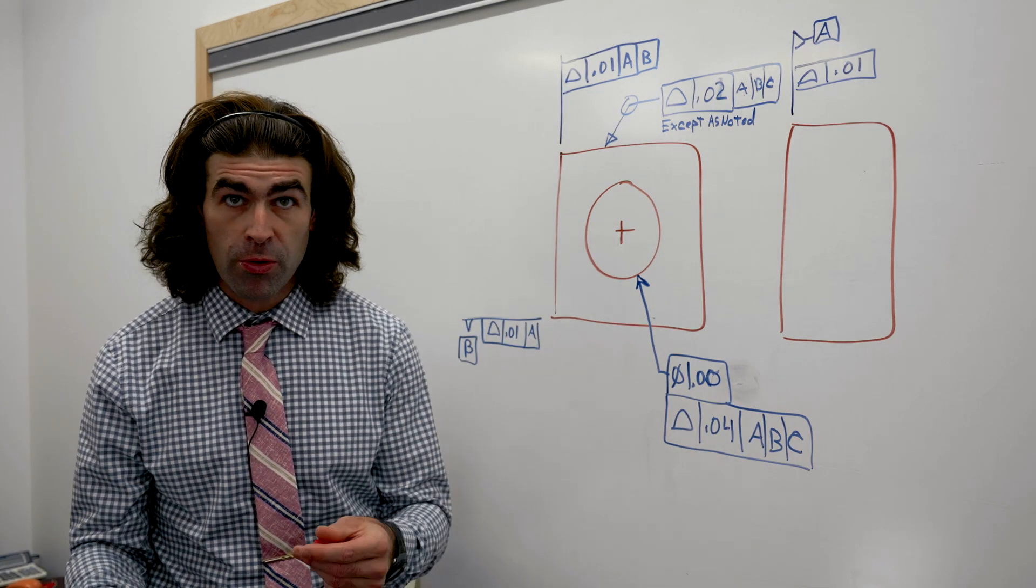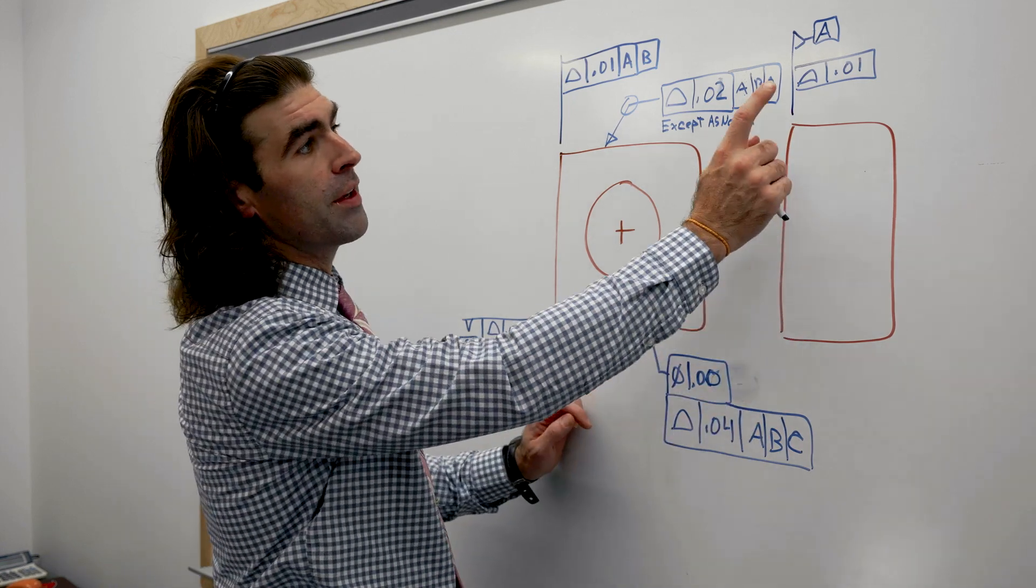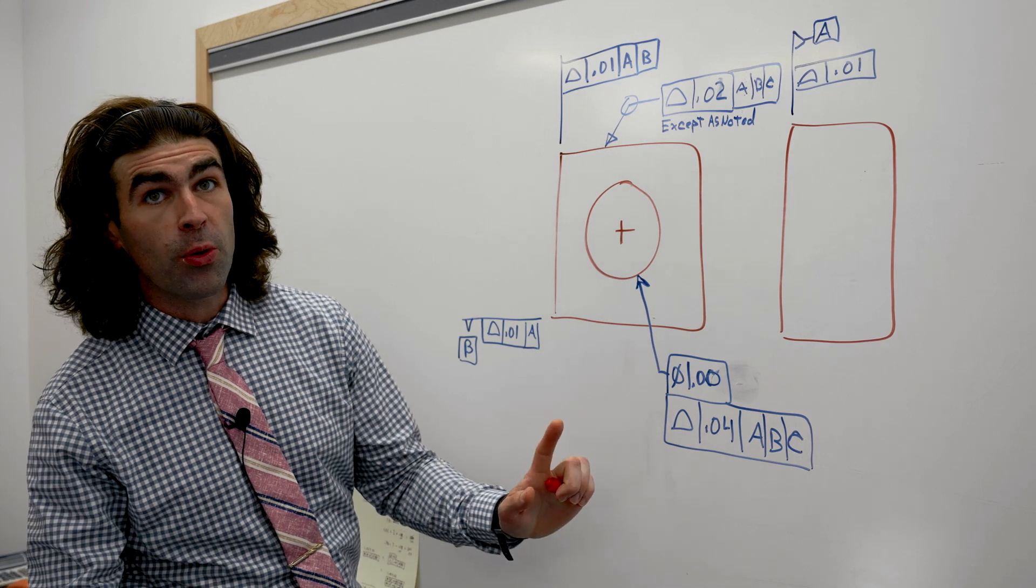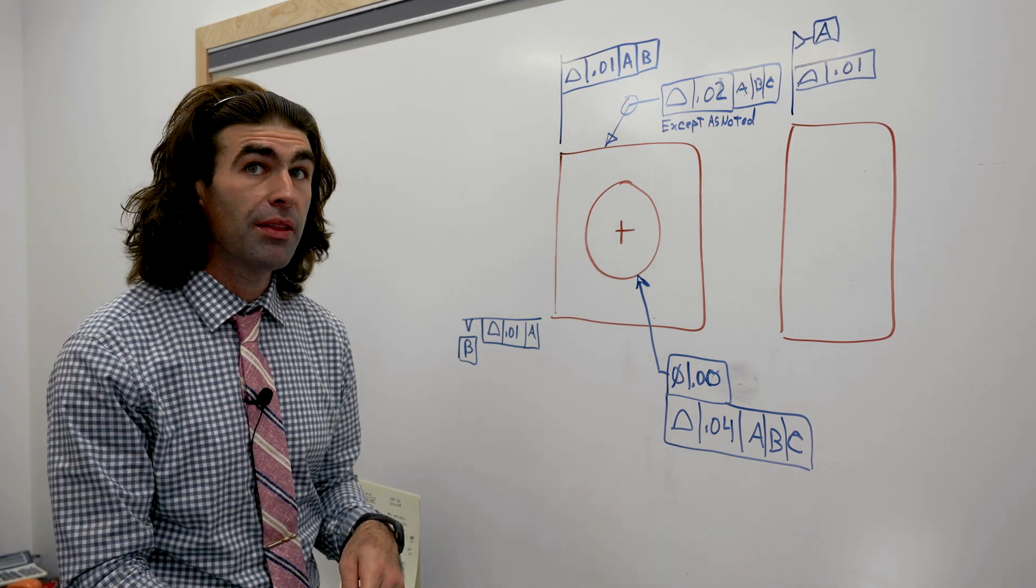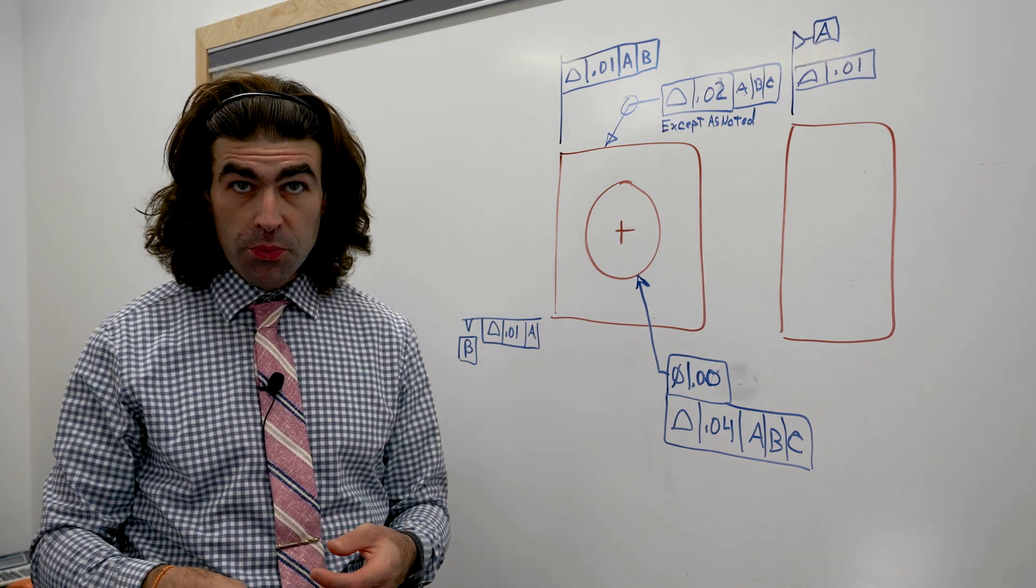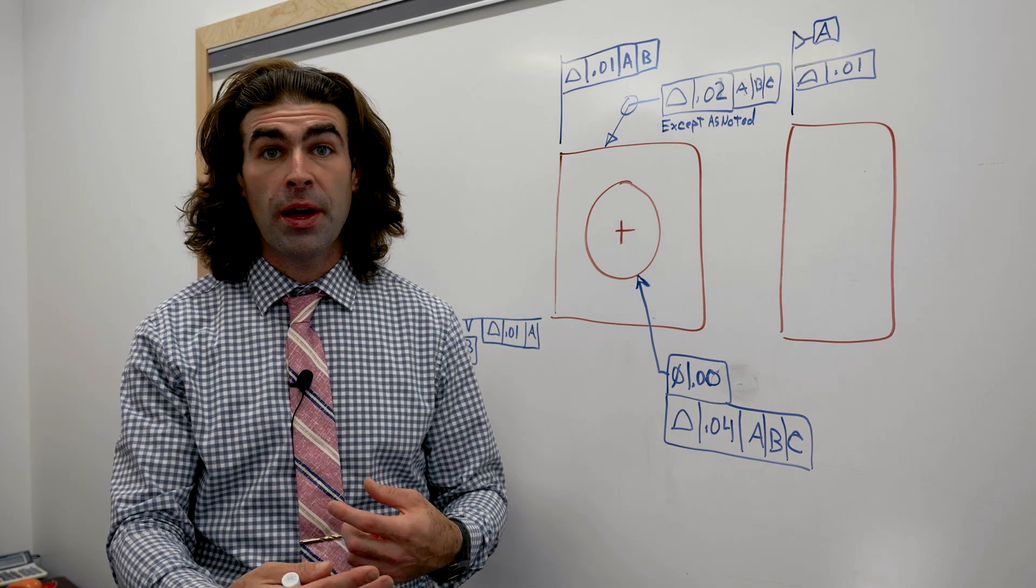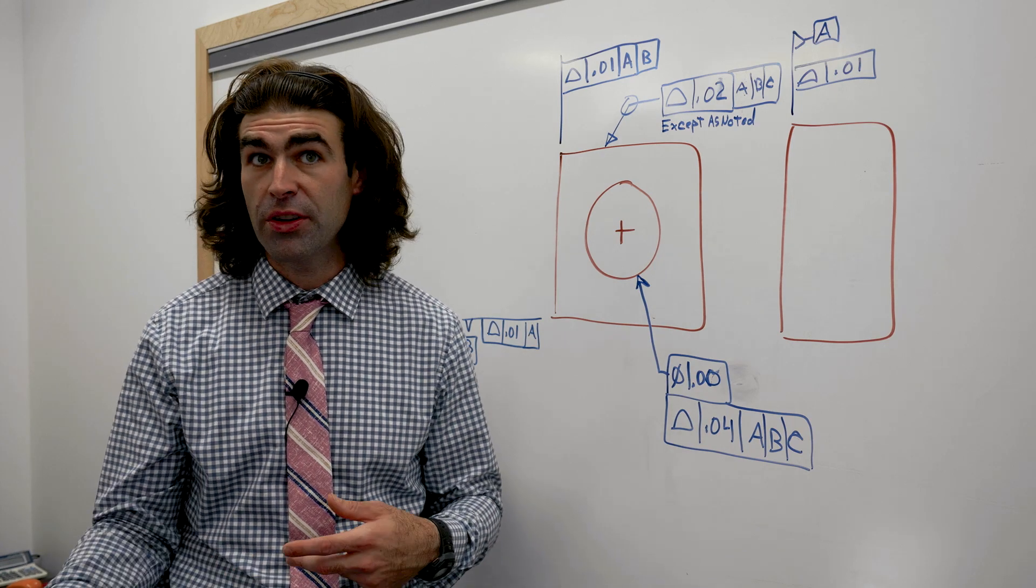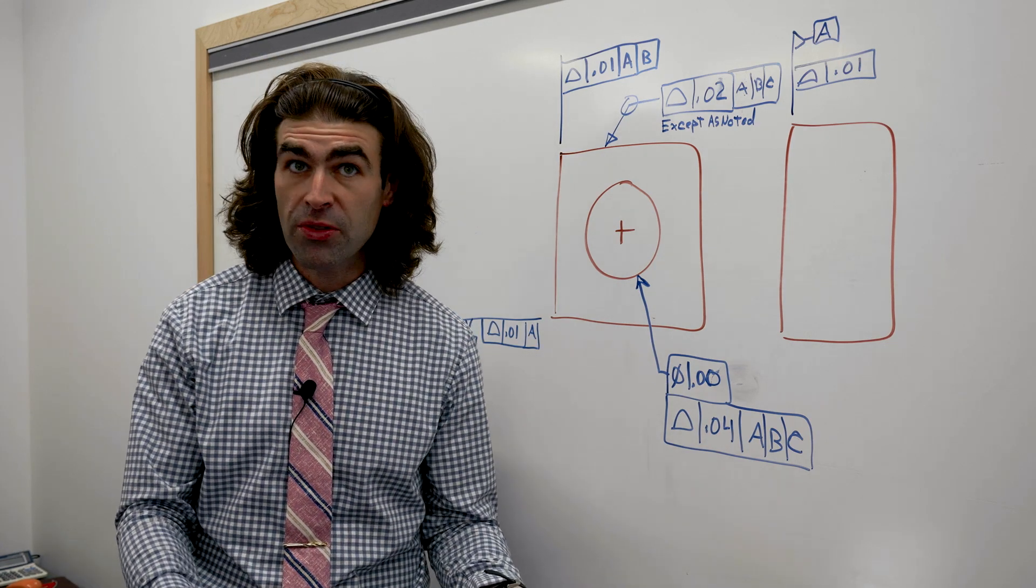Now the typical way you'd see this part is flatness, perpendicularity, perpendicularity, and position. The only one you can't really get away with is profile on the hole. Now GD&T-wise, design-wise, it makes sense. It gives you the most tolerance compared to just having a position with the MMC or a position with just an LMC.